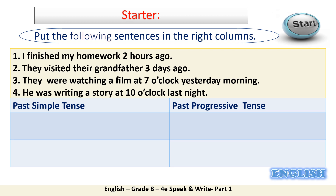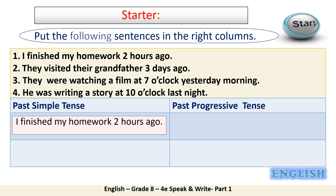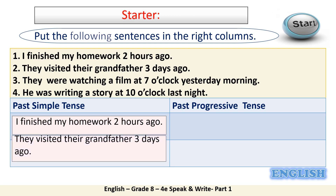Sentence number one: I finished my homework two hours ago. Of course, this sentence is written in past simple. Two: they visited their grandfather three days ago — also written in past simple. We can tell by looking at the verbs: 'finished' ends in -ed and 'visited' also ends in -ed.